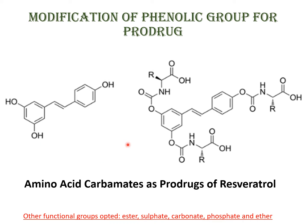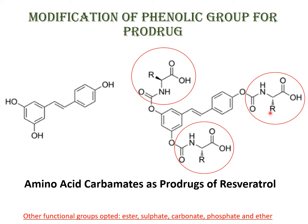For example, here we have resveratrol — it is a natural phenol. You can see three phenolic groups in this compound, and it is used as a dietary supplement. But the problem is it gets very rapidly metabolized in the body, so it is not available to show its action. Now the phenolic groups can be converted to carbamate esters, which protect these phenolic groups; in the body they will get hydrolyzed to again give phenolic groups which can show their action. Phenols can also be converted into esters, sulfates, carbonates, phosphates, and ethers to form prodrugs and overcome these problems.